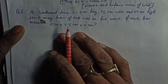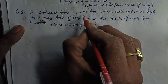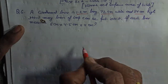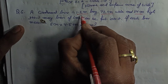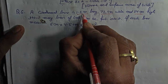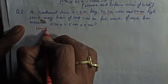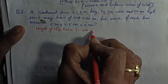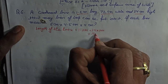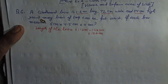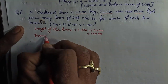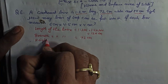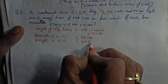Look at this question — it's a very nice question. The cardboard box is 1.2 meter long, but width is in centimeter and height is 54 centimeter. Width and height are in centimeter but length is in meter, so I will convert this measurement to centimeter. Length of the box is equal to 1.2 meter, multiplied by 100 gives 120 centimeter. Breadth of the box is equal to 72 centimeter and height of the box is equal to 54 centimeter.